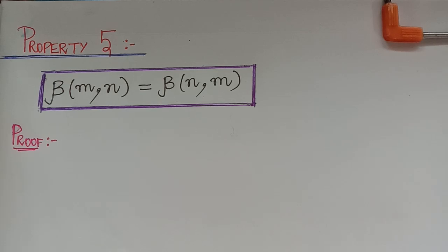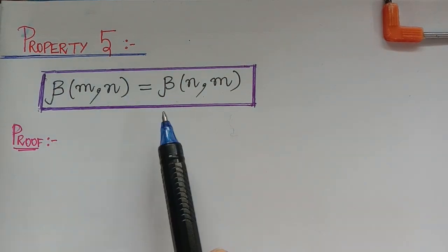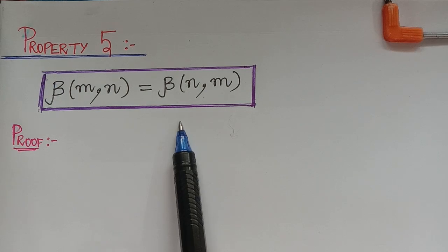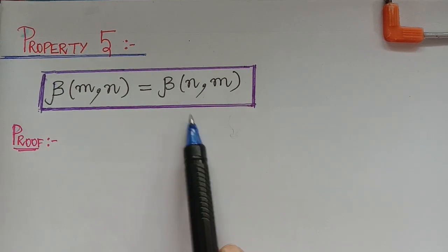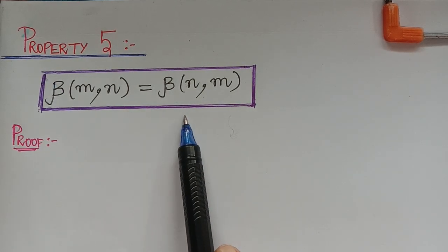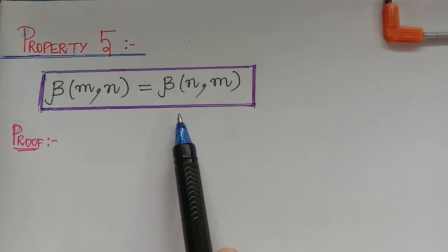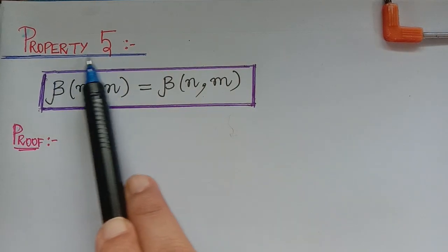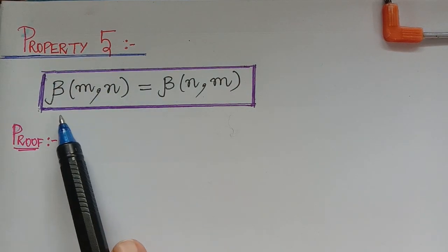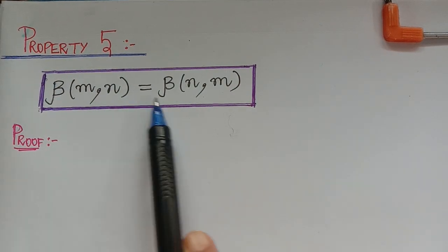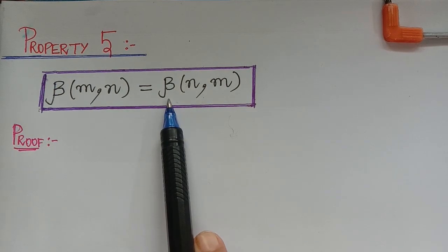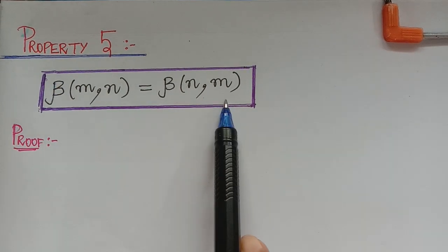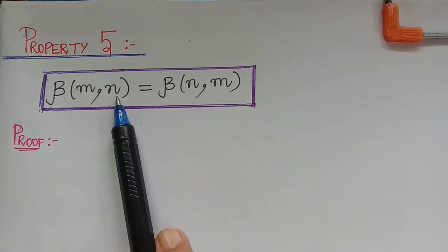Dear students, under the topic beta and gamma functions, here we have Property 5. Already in our previous video lectures, we have learned the definitions of beta and gamma functions and also seen the four properties under them. Now here we have Property 5, which says that beta of m, n is equal to beta of n, m. So let us see the proof now.